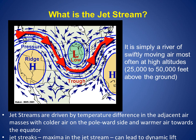Jet streams are driven by temperature differences due to the unequal heating of the earth. The jet streams are located where the temperature change is the greatest between adjacent air masses, with colder air on the poleward side and warmer air towards the equator.